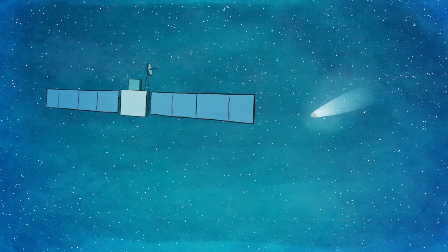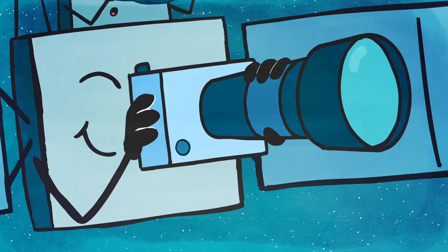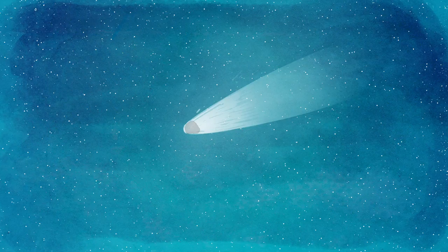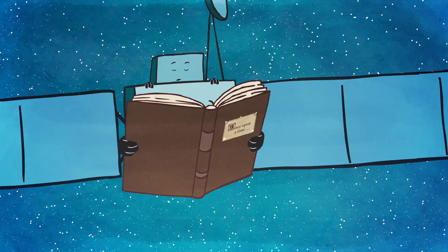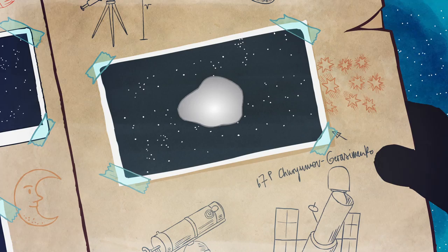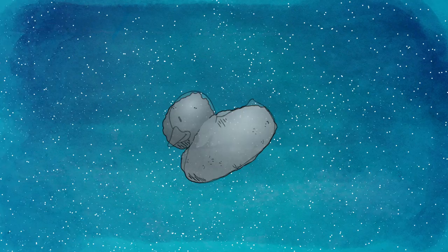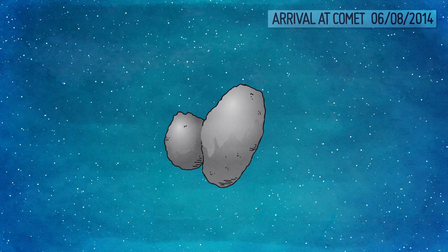Rosetta's exciting mission was to follow the comet as it traveled around the sun. She would learn all about the comet and how it changes as it gets warmer and warmer, while Philae would visit the surface. But as she got closer, Rosetta realized that the comet was much more complex than people had first thought using telescopes from far away. It almost looked like two comets stuck together, and from some angles its shape was really rather strange.